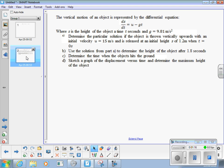The first thing we're going to do is determine a particular solution to that equation if the object is thrown vertically upwards with an initial velocity u of 15 meters per second and it's released at an initial height s of 1.2 meters when t is equal to 0. So we've got some initial conditions there. How are we going to start solving that problem?